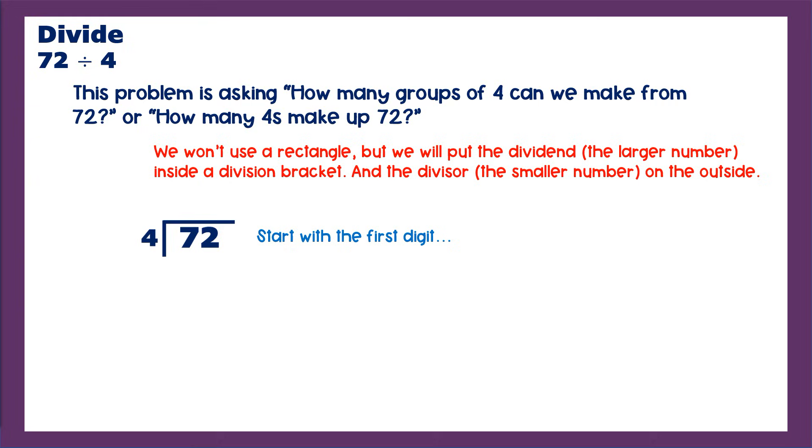And we are going to start with the first digit. We are going to say, how many times does 4 go into 7 without going over? Well, I know 4 times 1 is 4. I know 4 times 2 is 8, and 8 is too much. Therefore, it's got to be 1. And I'm putting it over the 7, because remember, we've only divided into 7 so far. We haven't even looked at the 2.